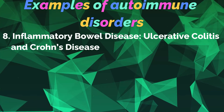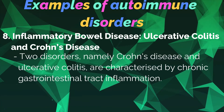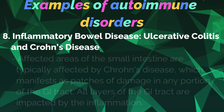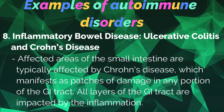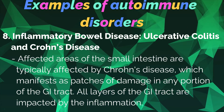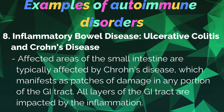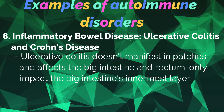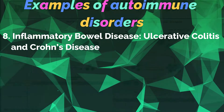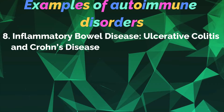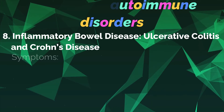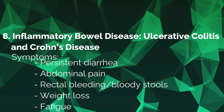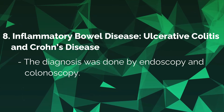Number eight: Inflammatory bowel disease — ulcerative colitis and Crohn's disease. Two disorders characterized by chronic gastrointestinal tract inflammation. Crohn's disease typically affects the small intestine, manifesting as patches of damage in any portion of the GI tract, with all layers impacted by inflammation. Ulcerative colitis doesn't manifest in patches and affects the large intestine and rectum, impacting only a single layer. Symptoms include persistent diarrhea, abdominal pain, rectal bleeding or bloody stools, weight loss, and fatigue. Diagnosis is done by endoscopy and colonoscopy.